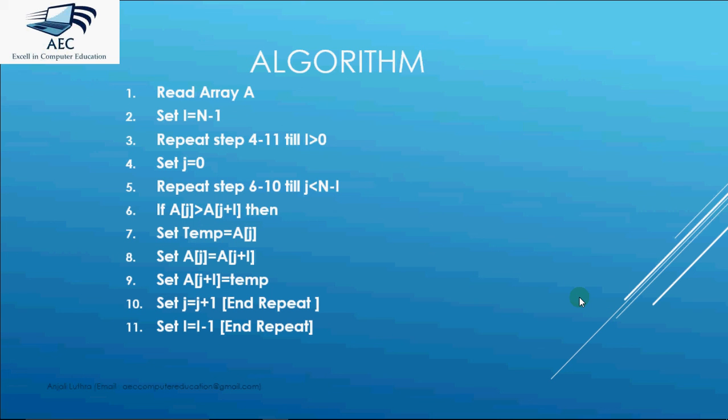Now this is the basic algorithm for shell sort. We have to read the array first. Then I take i for the gap. i is initially n-1. I am going to repeat the steps till i is greater than 0. We set j as 0 initially and we are going to repeat these steps till j doesn't reach n-i. So i is initially 9. First time 10-9 will be 1. So first time the loop will work one time. That means only one comparison will be performed.